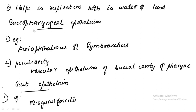Regarding bucco-pharyngeal epithelium, the epithelium seen in the mouth and pharyngeal region gets some modification to assist respiration. The modification means it becomes more vascular — rich with blood capillaries and blood vessels. Such type of modification is seen in Periophthalmus and Sinbranchus.